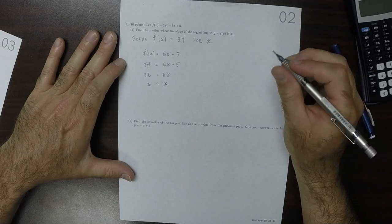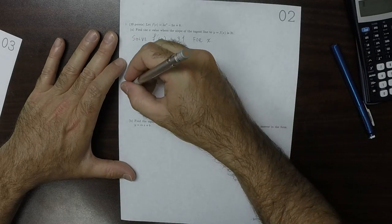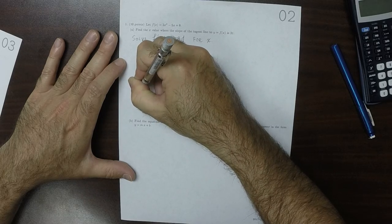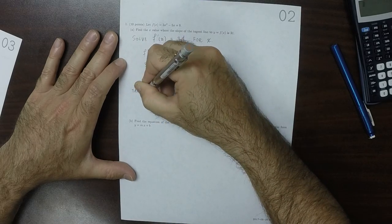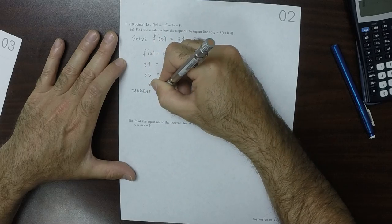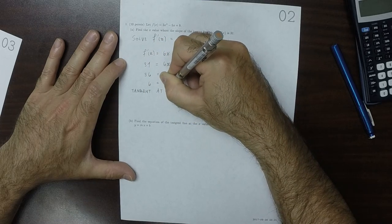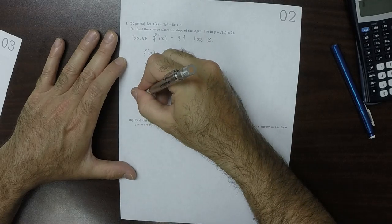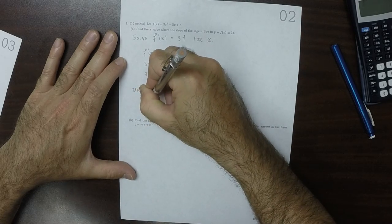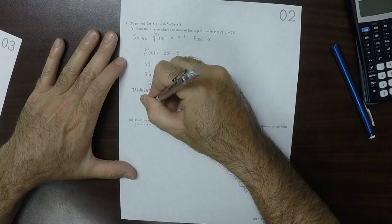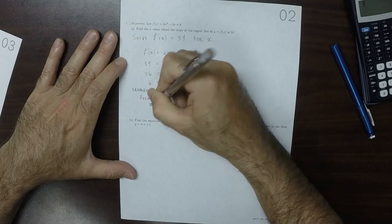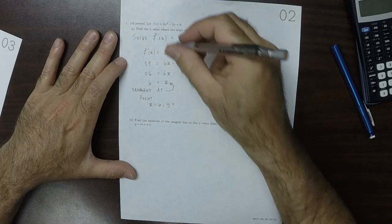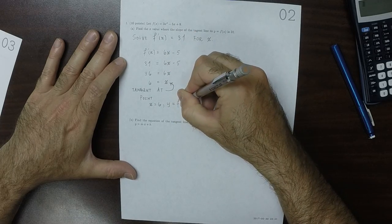So to find a tangent line, we want the tangent at this. So the point is at x is 6. And then to figure out the y value, the y value is what you get when you plug in 6 into f.